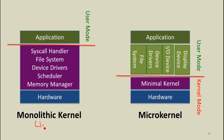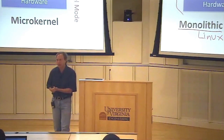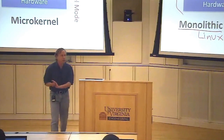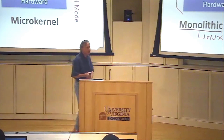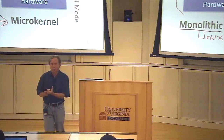Instead of doing what Linux does — a monolithic operating system where all the stuff runs at kernel mode — we've got our file system running with kernel privileges, all our device drivers running with kernel privileges. Millions of lines of code in a Linux system are running as supervisory. What we want to do with the microkernel is make the code that runs at kernel mode as small as possible, moving things like device drivers and file systems into user mode.